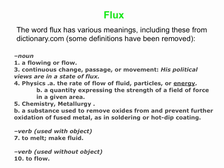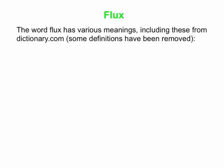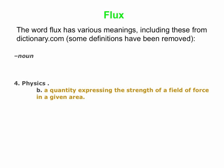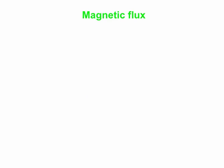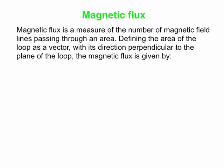So flux has a lot of different meanings, so how are we going to use it? Well, we're going to take this particular meaning here, this second physics definition, and I'm going to redefine it as, basically, this is how I think about flux, is a measure of the number of field lines that pass through an area. And in particular, we're talking about magnetic flux. So we're going to talk about magnetic flux as a measure of the number of magnetic field lines passing through an area.